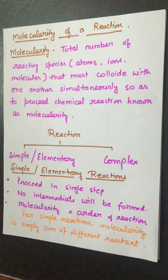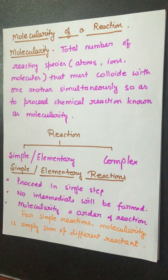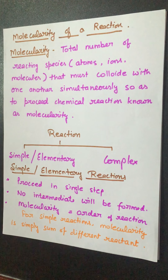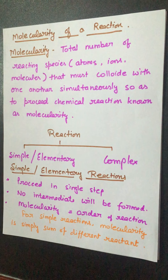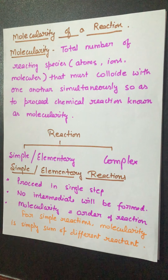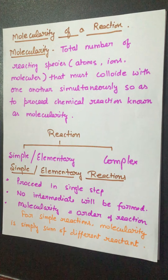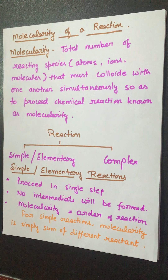Now we come to our next topic: molecularity. Molecularity means the total number of molecules — it may be atoms, ions, or molecules — that collide at one time to give a product. Molecularity can't be more than 3. Why not more than 3? If 4, 5, or 6 molecules come near each other, they are not able to collide simultaneously. At a single time, more than 3 molecules can't collide and convert into product. That's why the maximum molecularity for a reaction is 3.